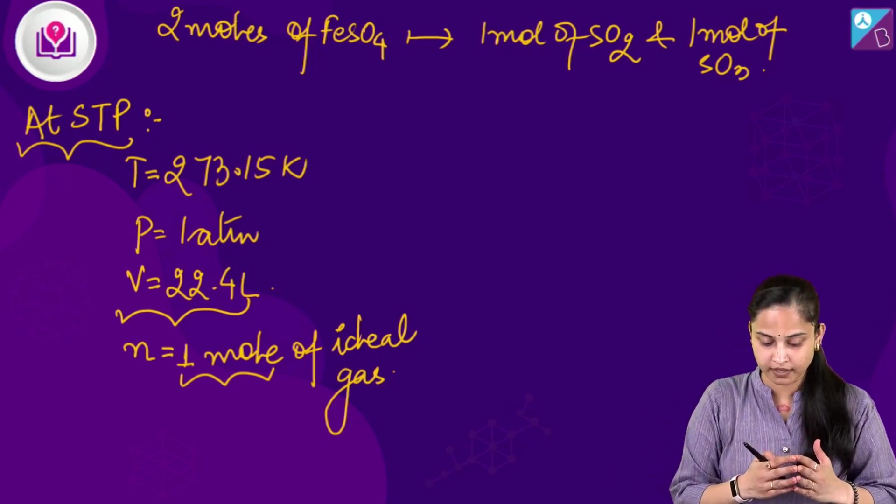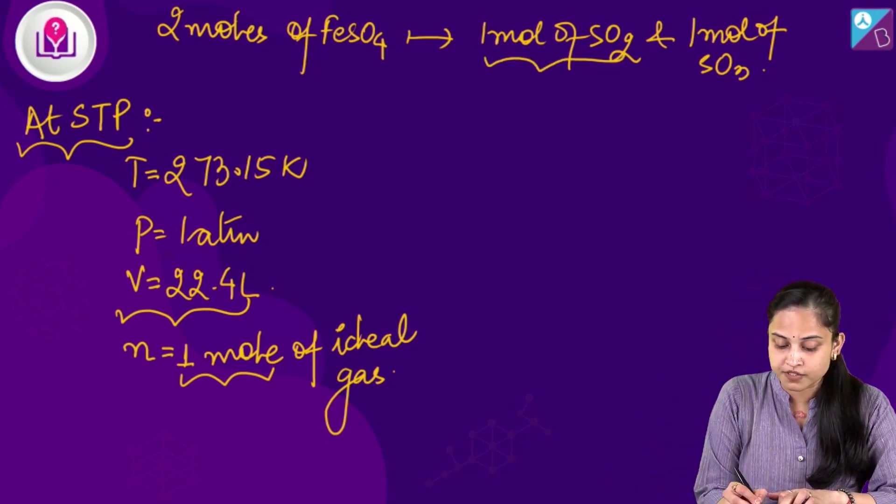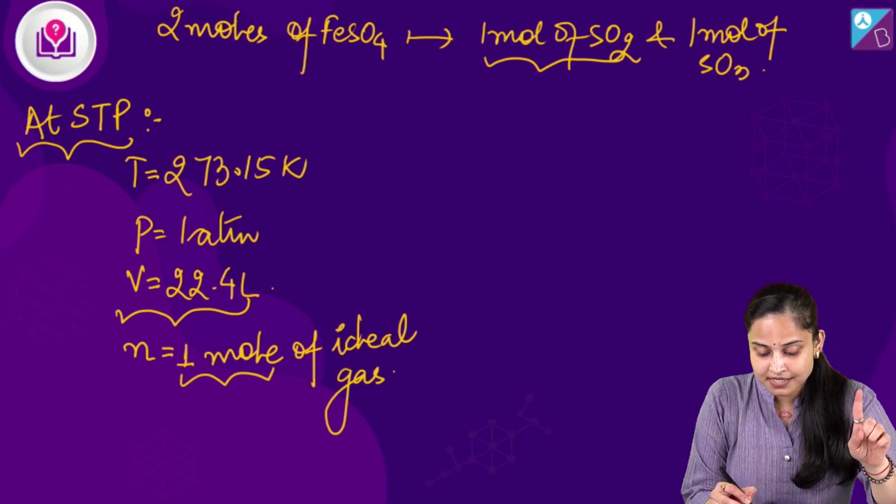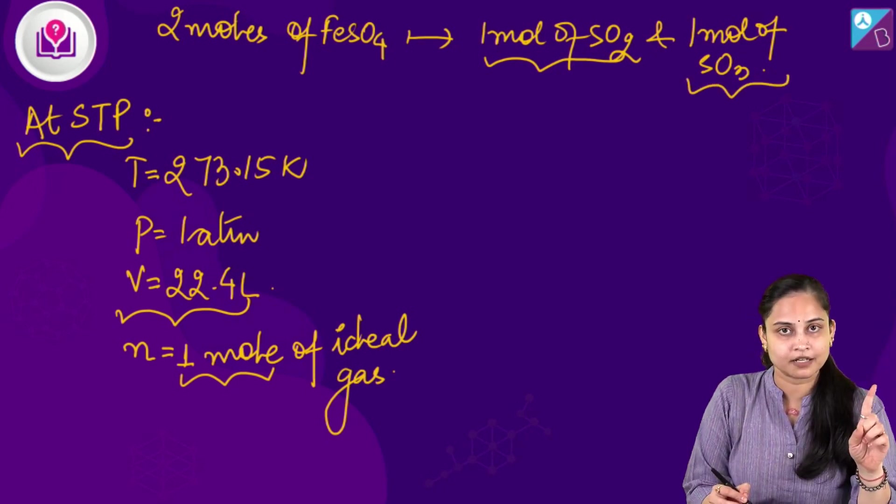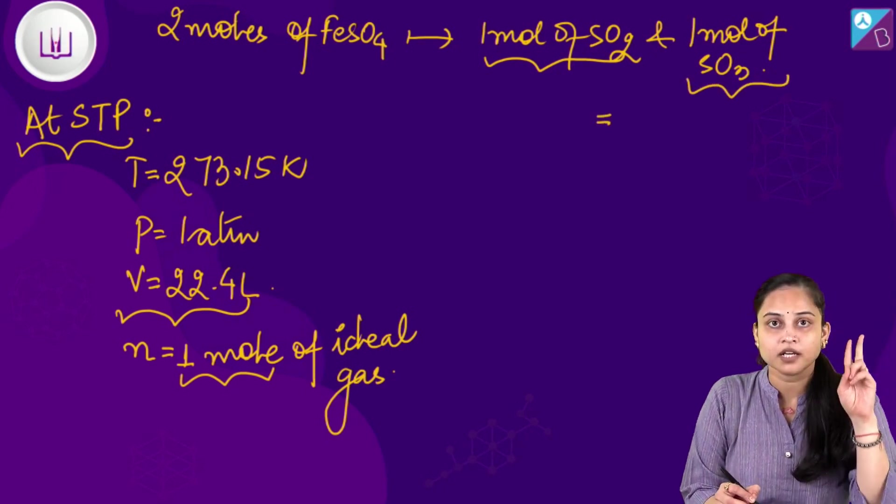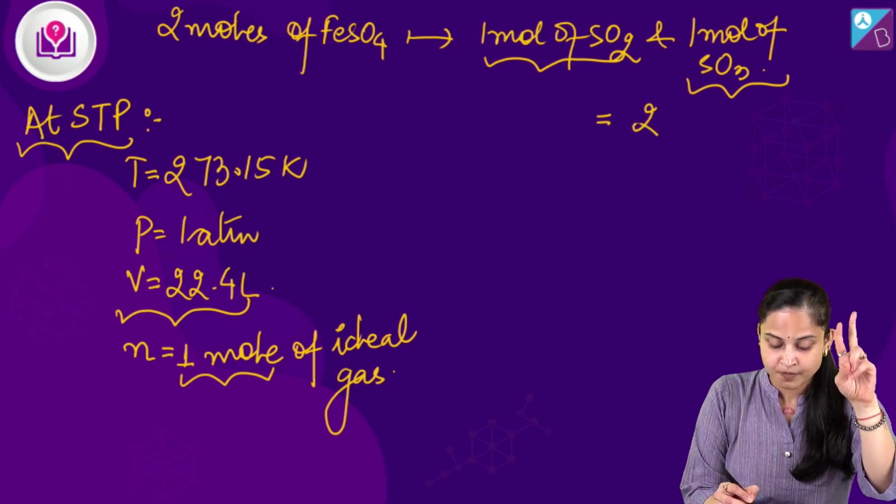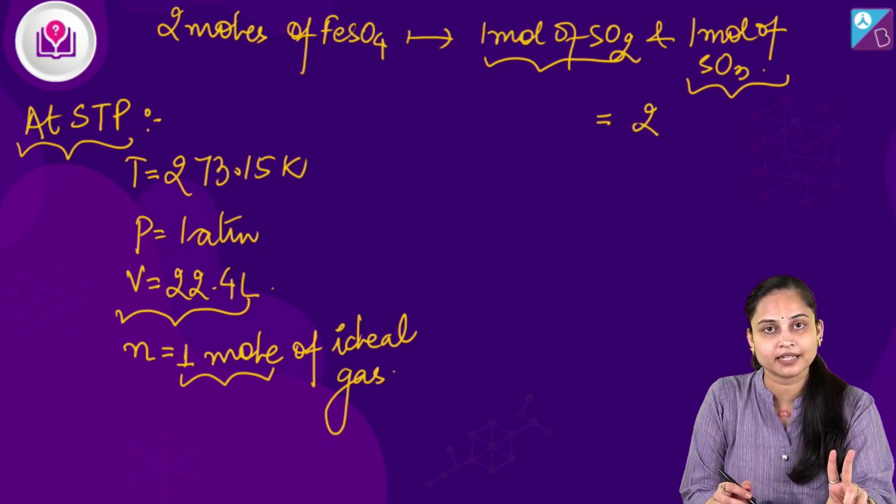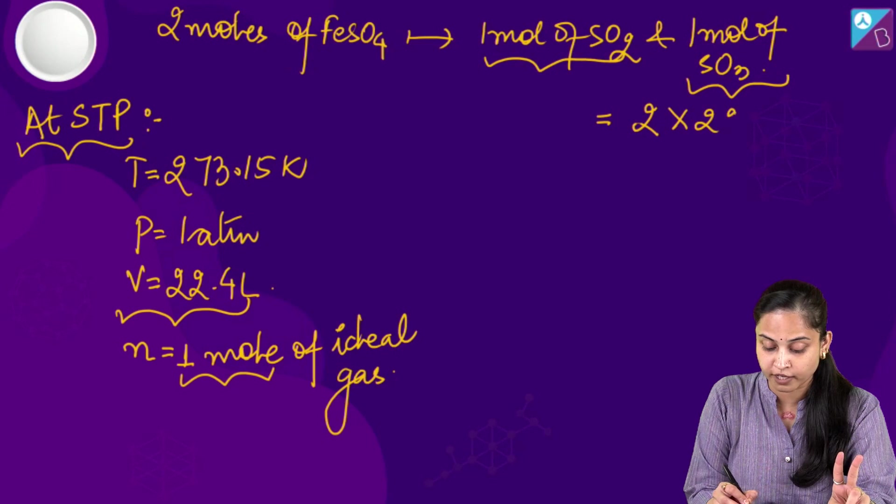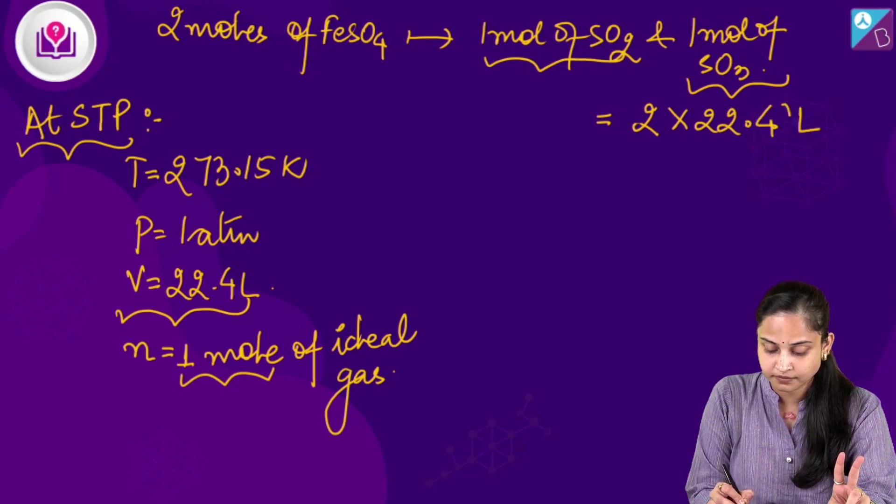So, what we can see over here is 1 mole of sulphur dioxide plus 1 mole of sulphur trioxide. That means we are having in total 2 moles. So what will be the volume occupied by them? It will be 2 into 22.4 litres.